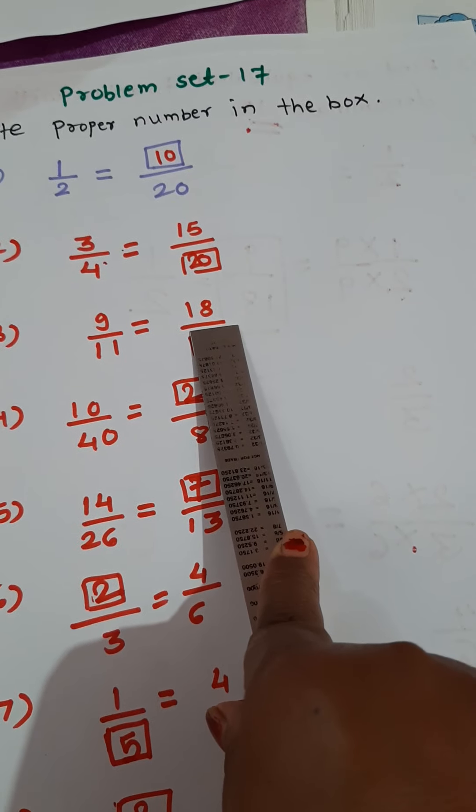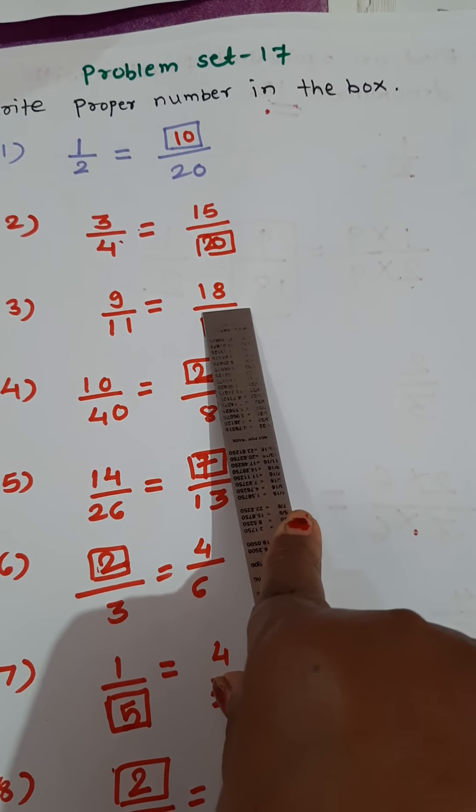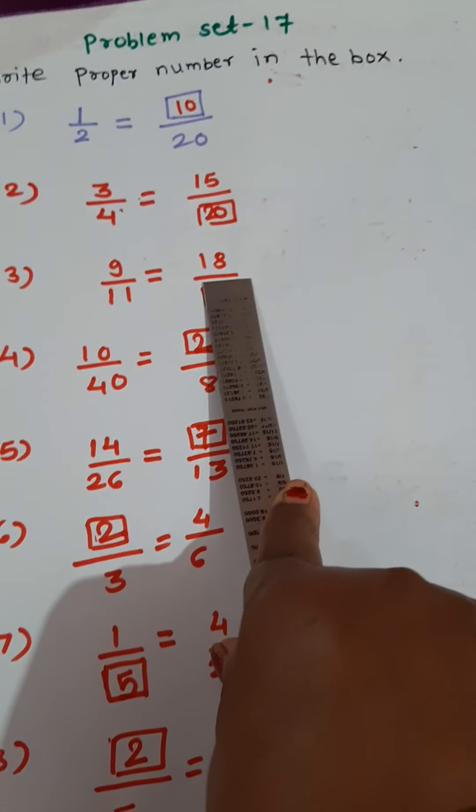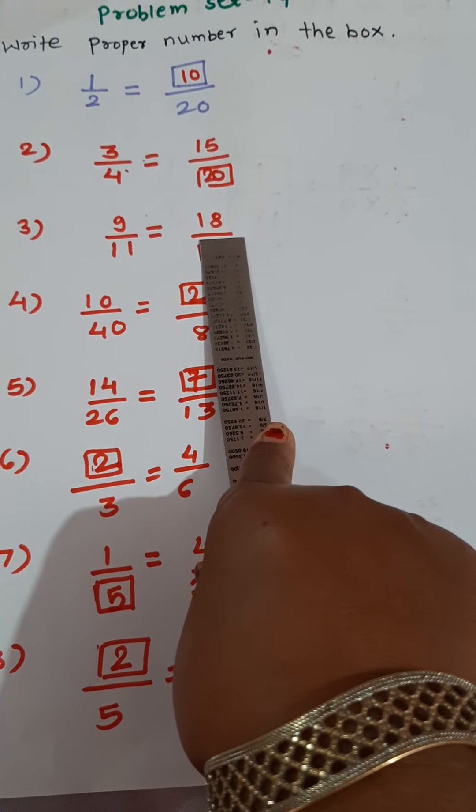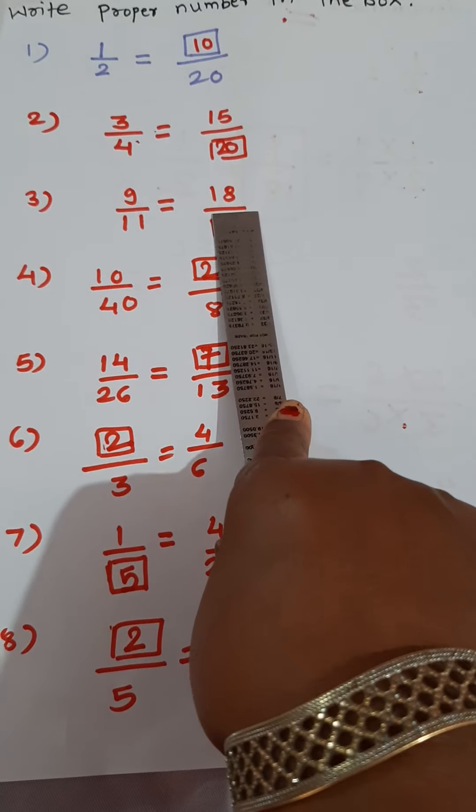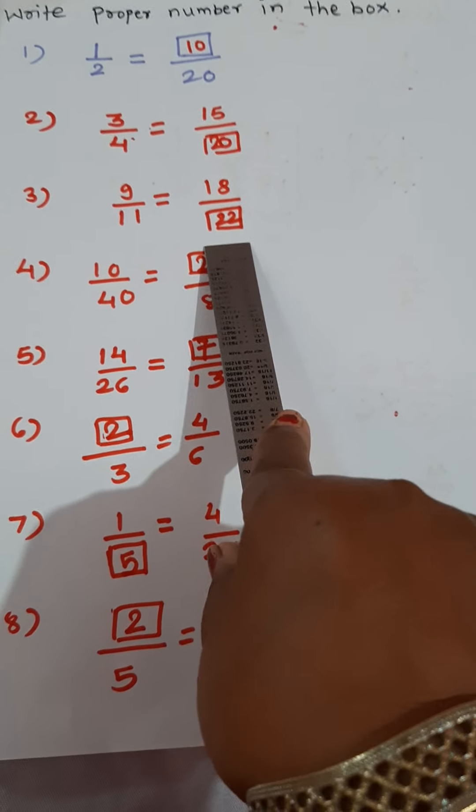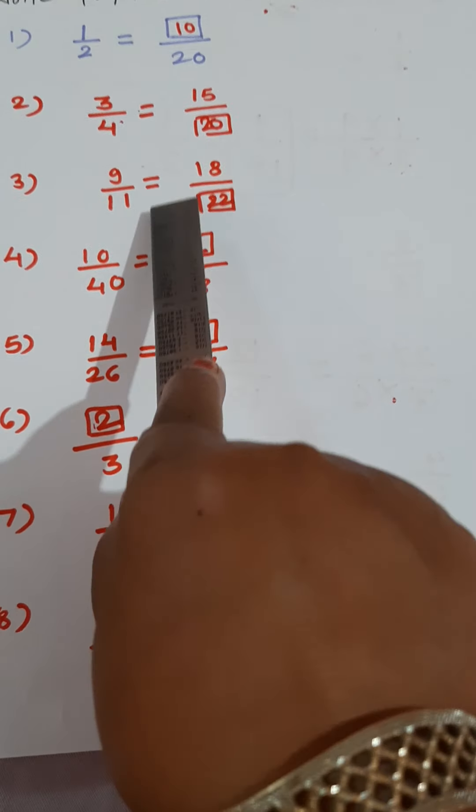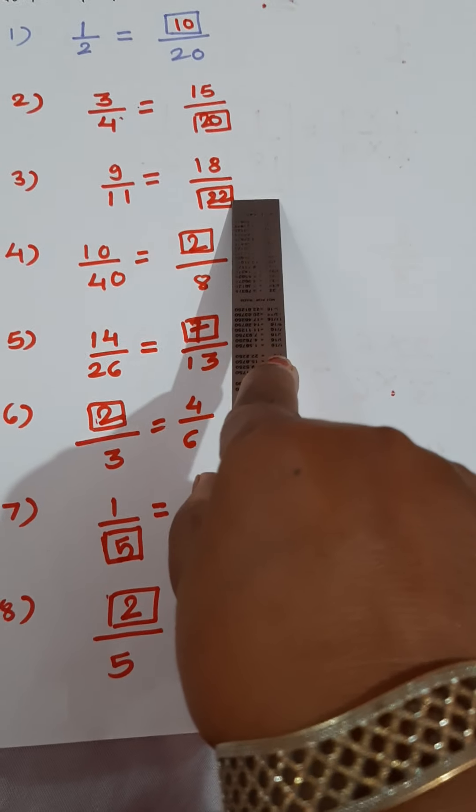Now look at the next problem. 9 upon 11 is equal to 18 upon dash. So 9 how many are 18? 9, 2's are 18. So 11, 2's are 22.